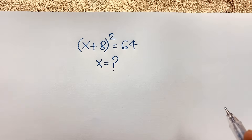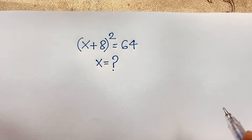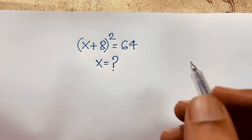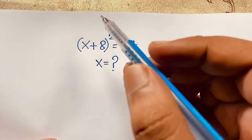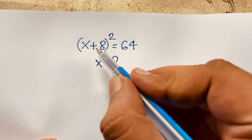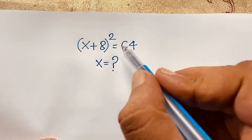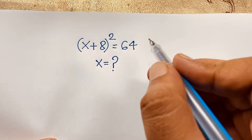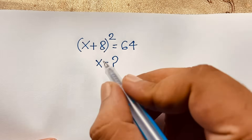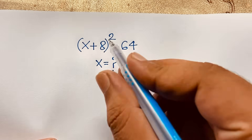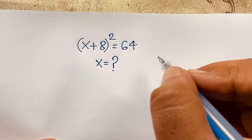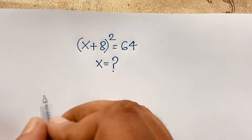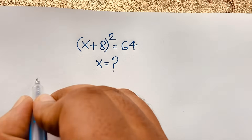Hello everyone, welcome to Russell's Classroom. Today we have solved a nice algebraic expression. This question is (x + 8)² = 64. x is equal to what? How to solve this interesting exponential math problem? I solved this question using two methods.